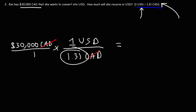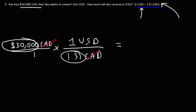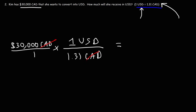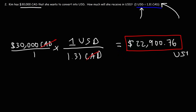Notice that 1.31 is on the bottom of the fraction, so for this problem we need to divide rather than multiply. When dealing with fractions, a number on the bottom means division, while two numbers on top means multiplication. So the answer is $30,000 divided by 1.31, which gives Kim $22,976 USD. That's how much US dollars she expects to receive.